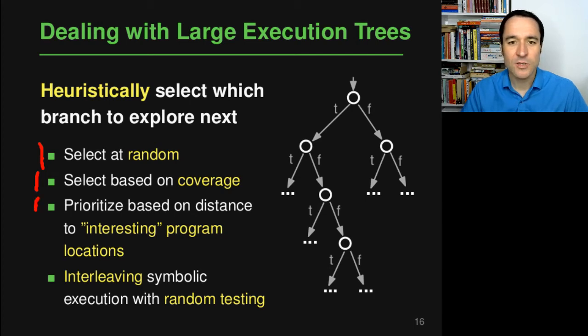Yet another option is to prioritize branches based on their distance to some interesting program location. So sometimes you have some locations that you know would be interesting to reach, for example assertions or maybe calls to particular APIs. And in that case you can compute a distance and then prioritize those branches that are likely to bring you closer to your interesting location.